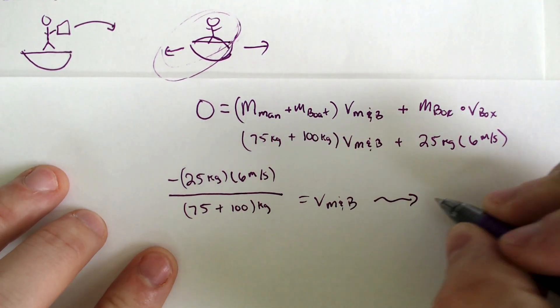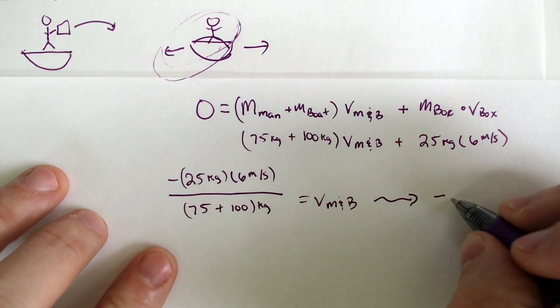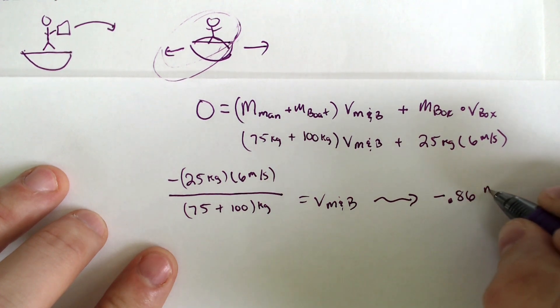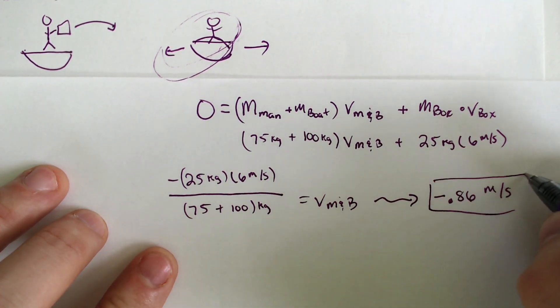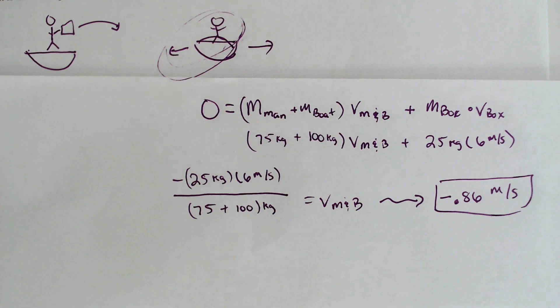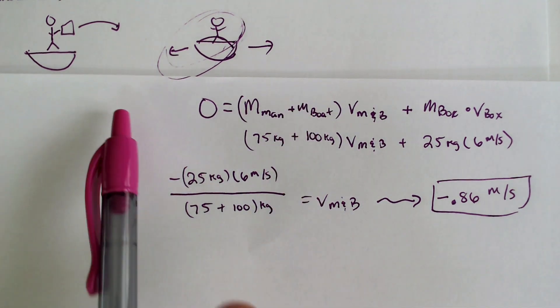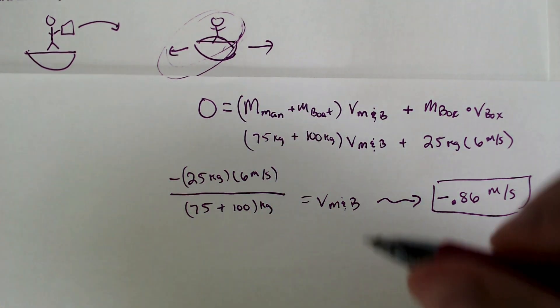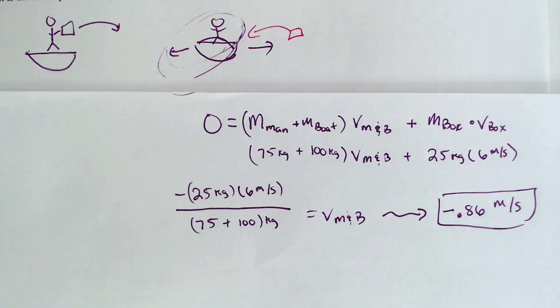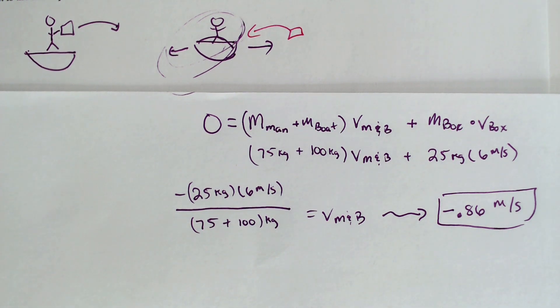And if we do all that, we would end up with a negative 0.86 meters per second for the velocity of the boat and the man moving in the opposite direction of the box. Because the box moved this way, the man and the boat move the opposite direction to equal and opposite directions, thus keeping all of the conservation of energy and momentum that we've talked about.